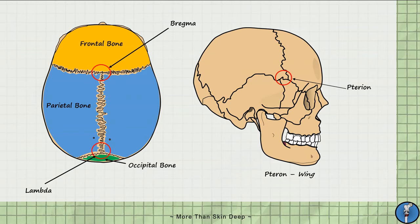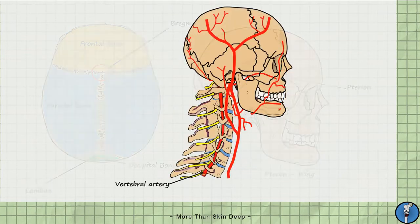This means any fracture of the pterion will likely lead to laceration of the middle meningeal artery. Next, let us look at the branches of the arterial supply of the head and neck.